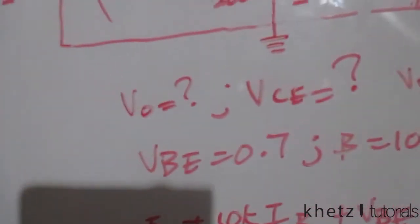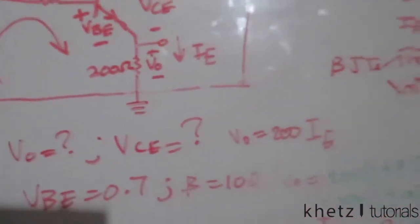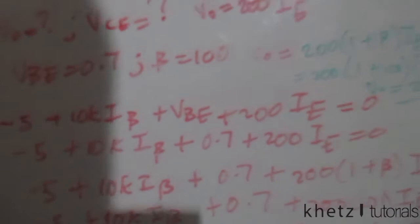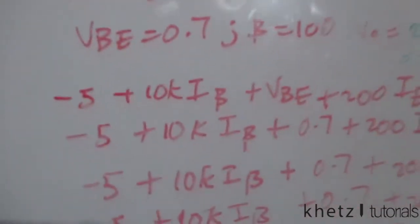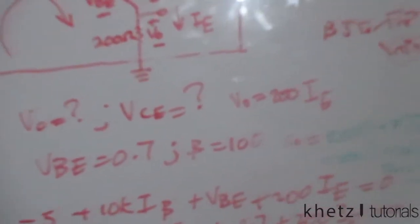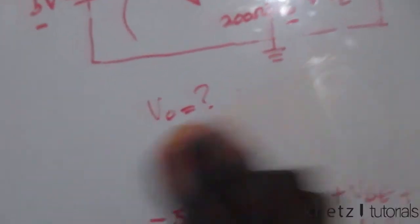We now have vo = 2.876 V. The question also asks for vce, so recording that result, we erase the working for the previous part and continue to find vce.